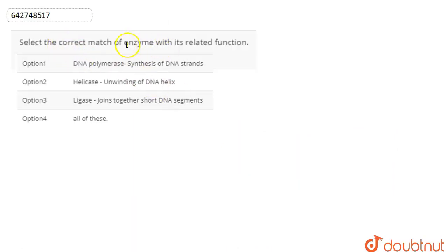The first option is that DNA polymerase brings about the synthesis of the DNA strand. So during the process of replication, during which the DNA basically replicates or produces more copies of its own...